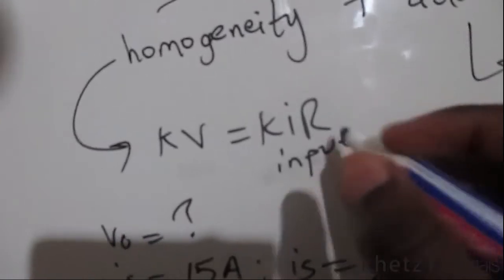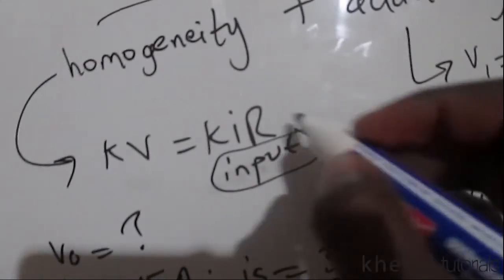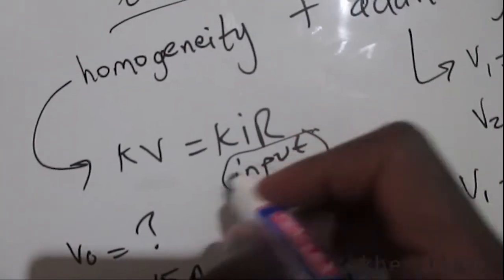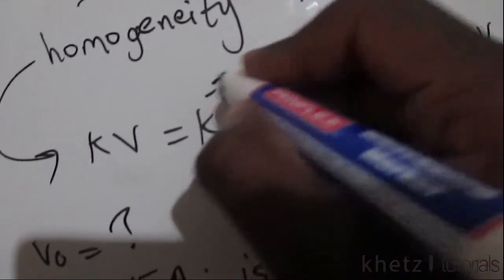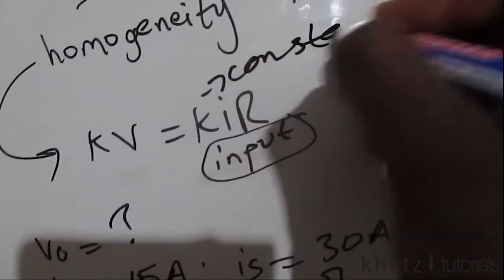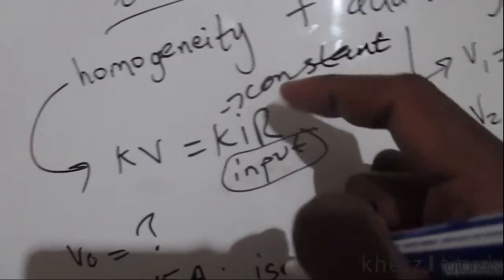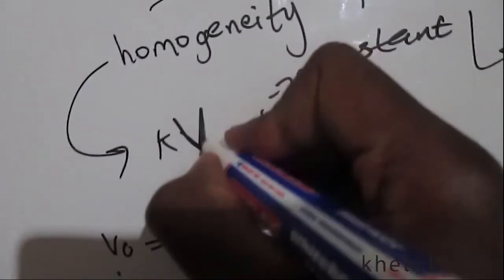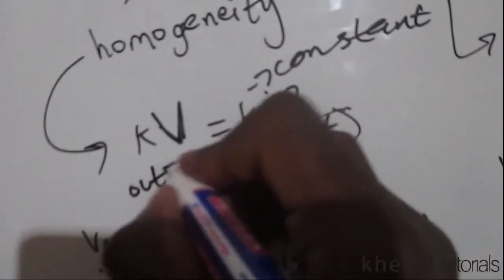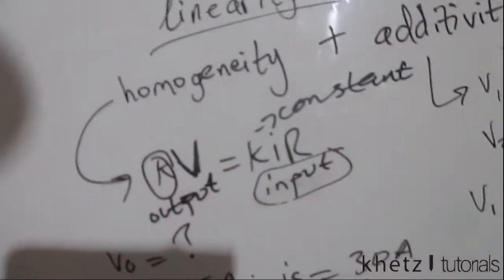So if you multiply the input side, taking this side to be the input side by a constant k, then you expect the same thing to happen on the output side. You expect the output to also be multiplied by that same constant k.